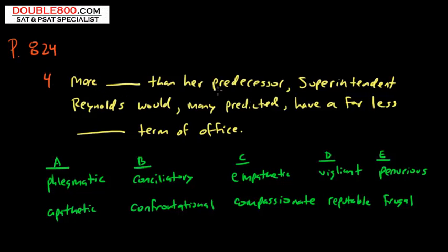More blank than her predecessor, the person who came before her. Reynolds would, many predicted, have a far less blank term in office. We don't really have a lot of clues here, but we do know that these are opposite. More blank than the person who came before her. She would have a far less.